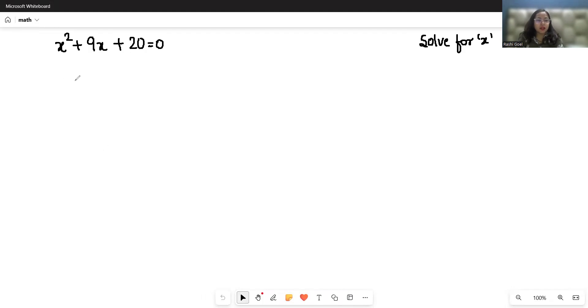I'm going to use the factorization method. In factorization method, you have to break this middle term 9x into two numbers such that when you add these two numbers you get 9, and when you multiply those two numbers you get the last digit 20. What can be the two numbers? It's simply 4 and 5. 4 plus 5 is 9, and 4 times 5 is 20.